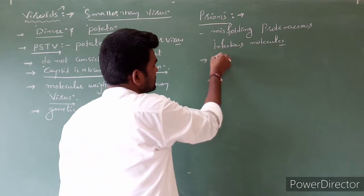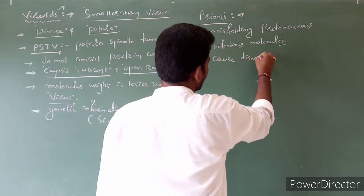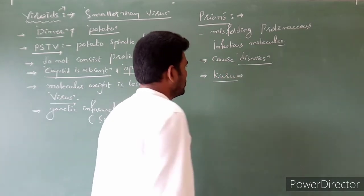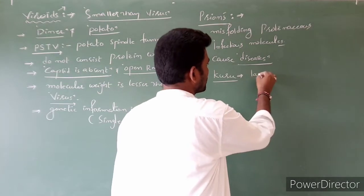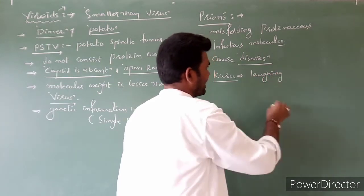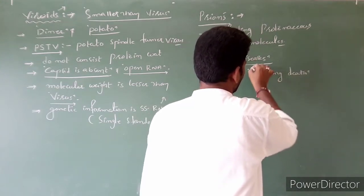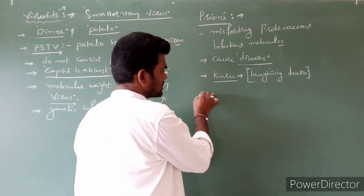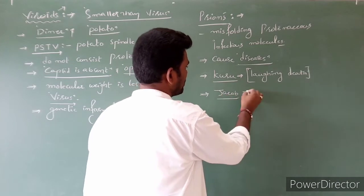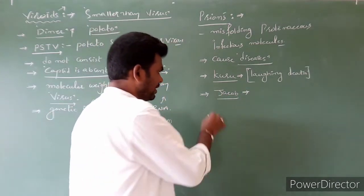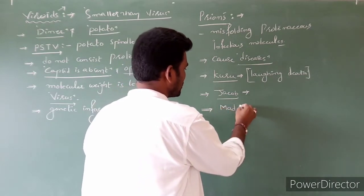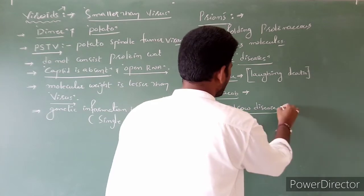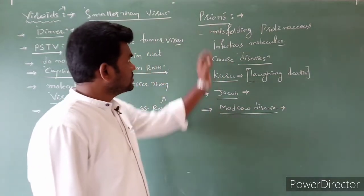Prions have the capacity to cause diseases. One such disease is Kuru disease, also called Laughing Death disease, in humans. Next disease is Creutzfeldt-Jakob disease, also in humans. Next is Scrapie disease, especially in cattle and sheep. So this is regarding Prions.